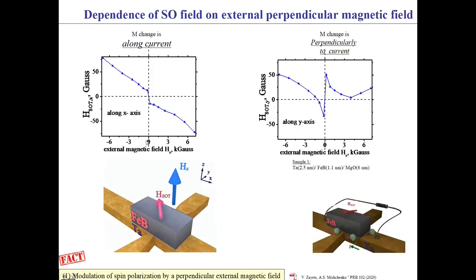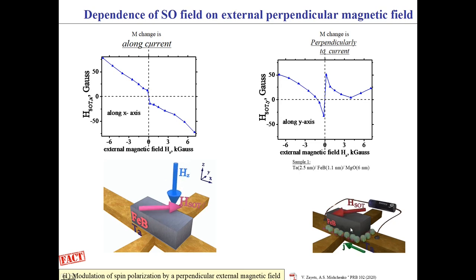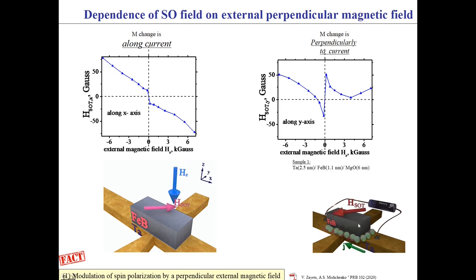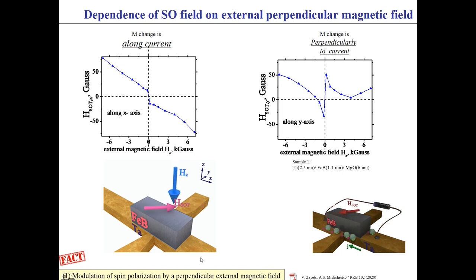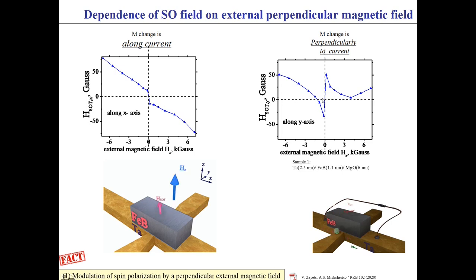This slide shows the measurement of SOT magnetic field when an additional external perpendicular magnetic field is applied. The spin-orbit torque is due to spin accumulation at the nanomagnet interface. The external magnetic field affects both the direction and amount of the spin accumulation. As a result, the spin-orbit torque and the current-induced magnetic field should depend on the external magnetic field. These graphs show the measured components of SOT magnetic field along and perpendicular to the current as a function of external magnetic field, with field-dependent changes as large as 70 Gauss.